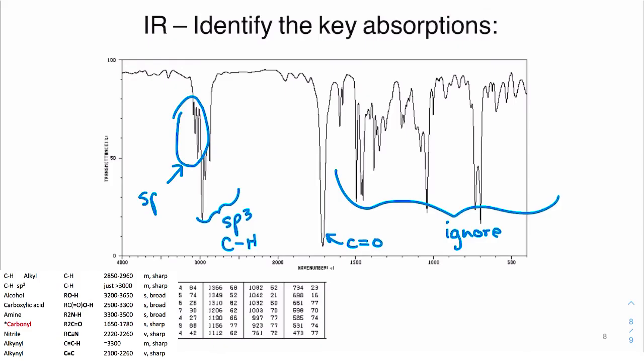Notice these sharp medium intensity peaks just above 3000. These are sp2 hybridized CH groups, making us think about either alkenes or benzene rings. No other peaks are particularly important. We ignore peaks near the baseline. If we look at the true molecule, we have an aromatic ring, carbonyl stretch, and lots of sp3 hybridized CH groups.